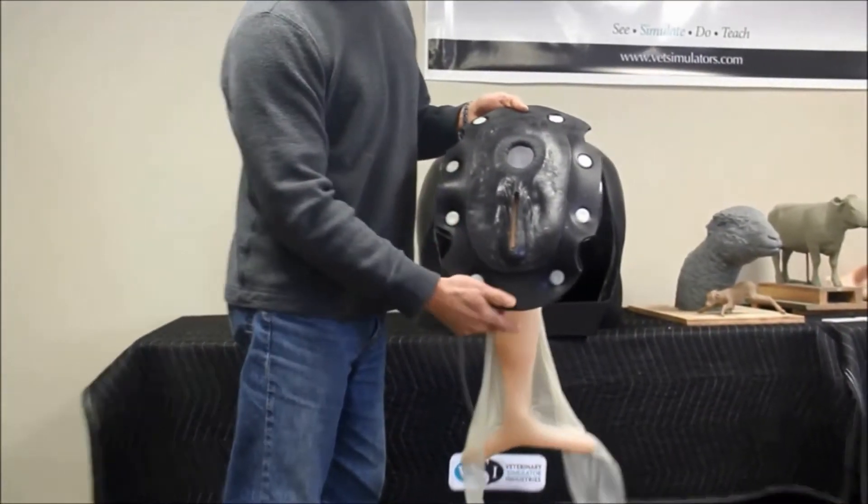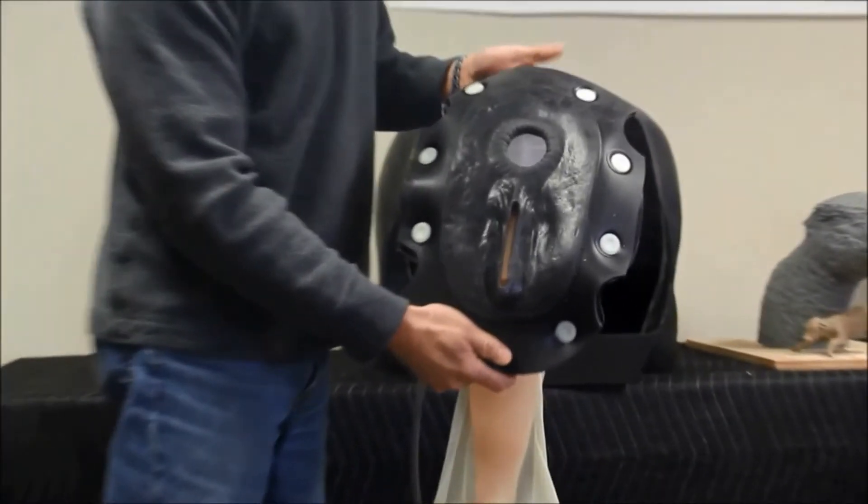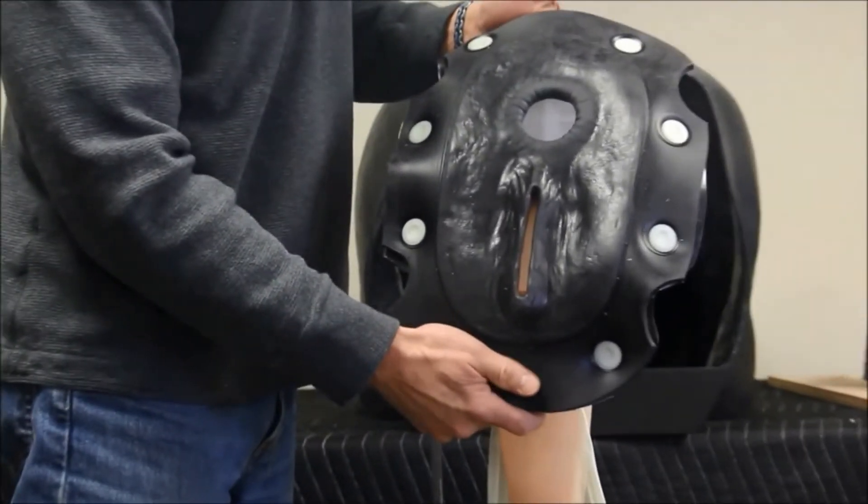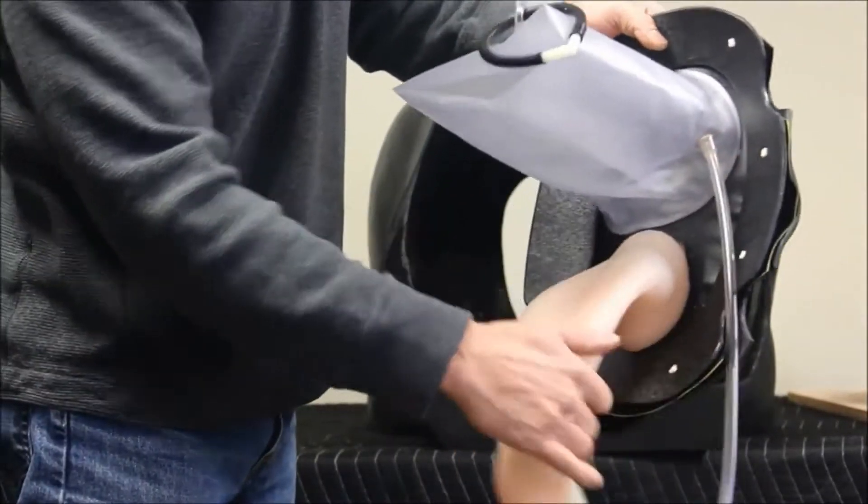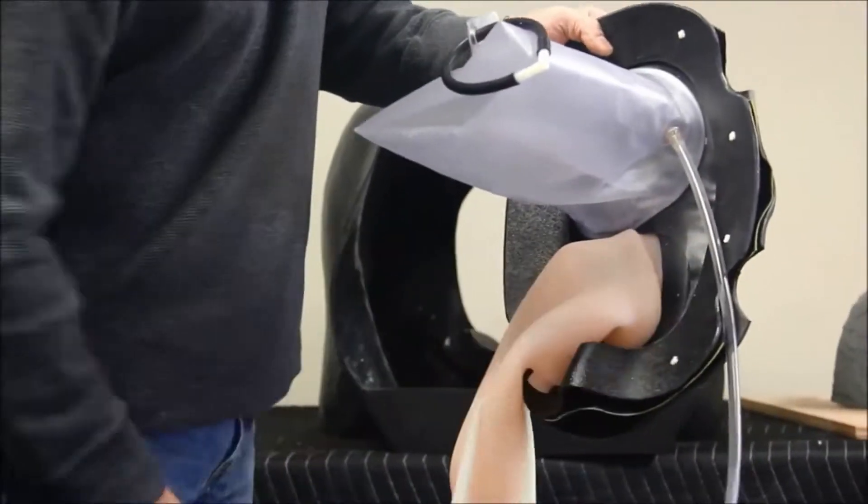This is the equine palpation assembly, which is also a replaceable part. It has a soft perineum panel with anal and vulva openings, which is mounted to an ABS plastic ring via plastic fasteners.